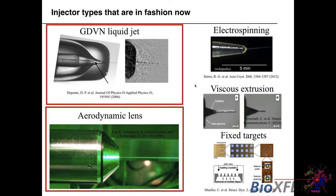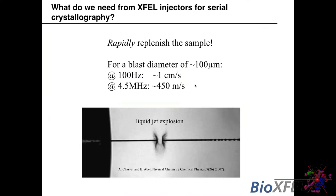There are lots of different types of injectors for shooting particles into an x-ray beam. The ones in fashion at the moment are the gas dynamic virtual nozzle (GDVN) liquid jet, aerodynamic lenses for single particle imaging, and the viscous extrusion jet — also known as the LCP injector — which injects lipidic cubic phase crystals and slows down the injection speed. There's also electrospinning developed by Ray Sierra and others at LCLS, and fixed-target samples which can achieve very high delivery efficiency by carefully positioning crystals.